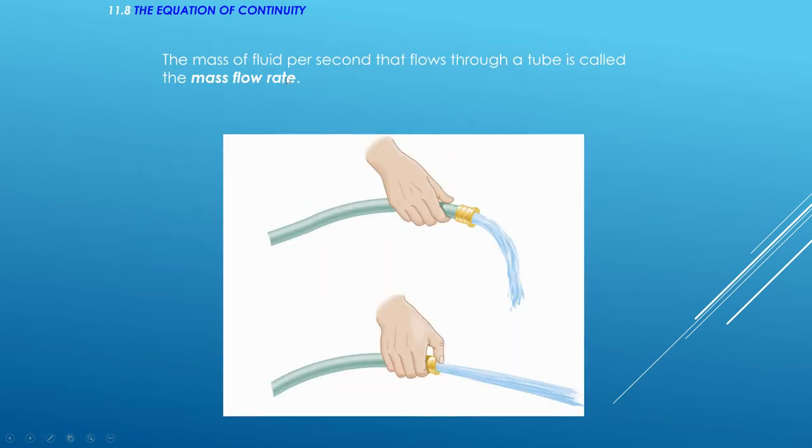So the first thing we have is this equation of continuity. And before we can get to that, we have to talk about what we refer to as the mass flow rate. And this is the mass of the fluid that passes through something per second. So if I have water, say, for example, coming out of this hose, we talk about the mass of the water coming out in a particular amount of time.